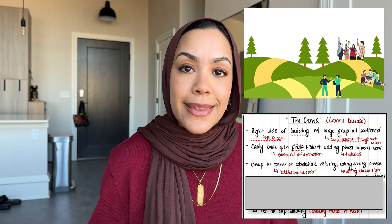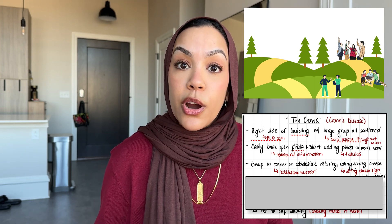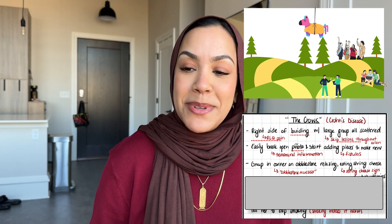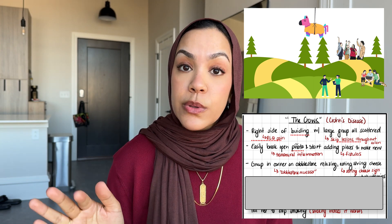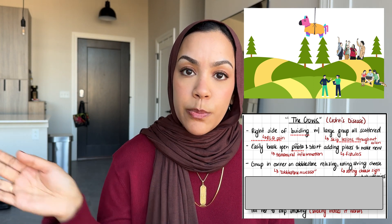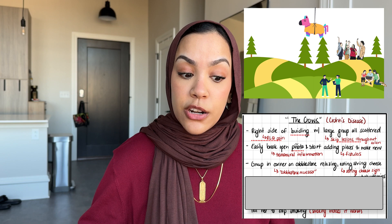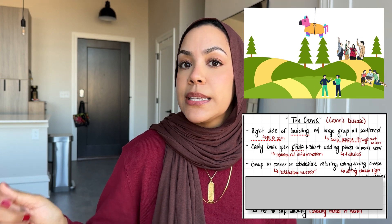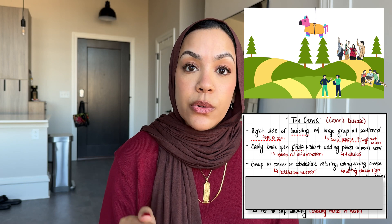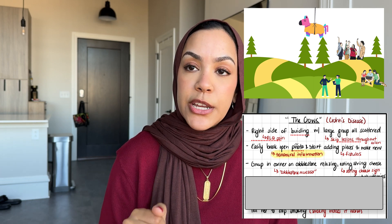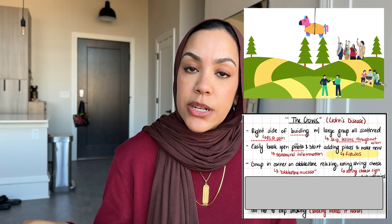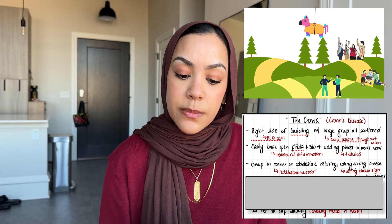Why are these kids scattered throughout the park? The competition was a piñata-hitting competition. The crows — the Crohn's disease side — easily broke through their piñata: one smash blew the whole thing open, scattering pieces everywhere, and some kids are putting pieces together to make another piñata. This represents transmural inflammation, where the disease goes all the way through the wall of the colon, and fistula formation — both important on exams.